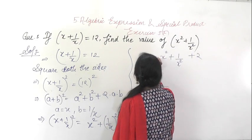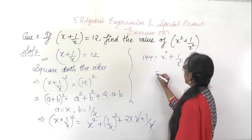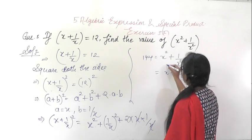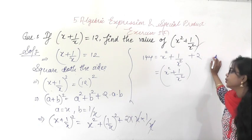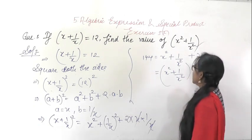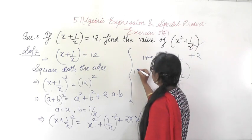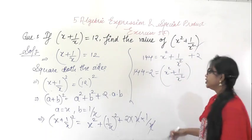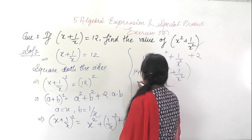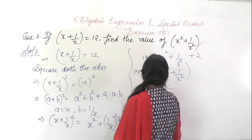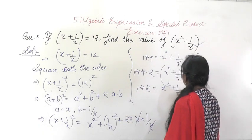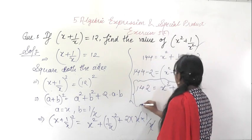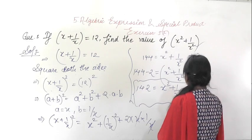So 12² = 144. From here you write x² + 1/x², which is what we need to find. Take 2 to the left-hand side: 144 - 2 = 142, which equals x² + 1/x². So the value of x² + 1/x² is 142.